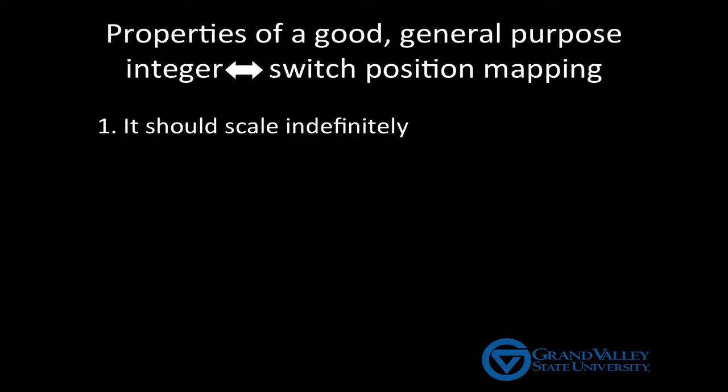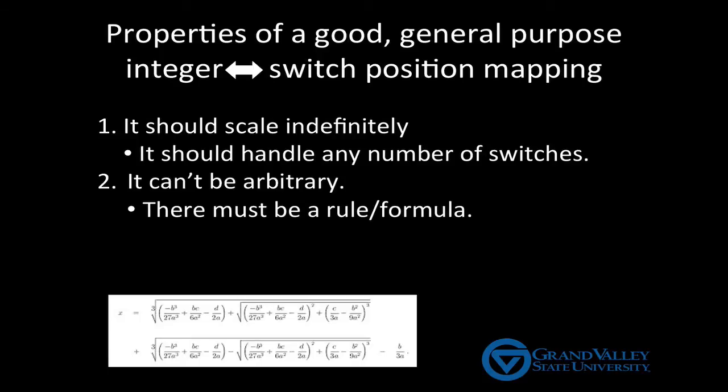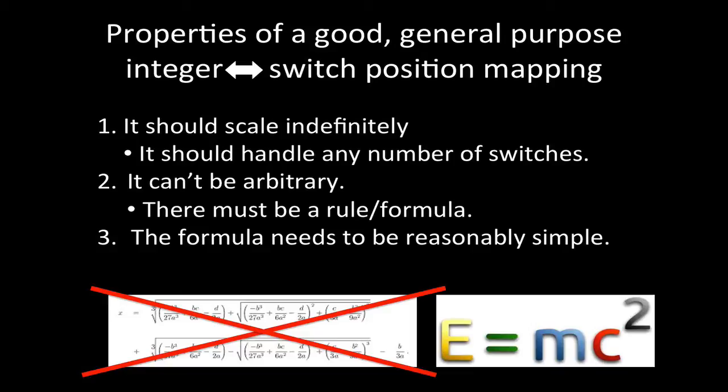So if all the circuits are going to speak the same language, or more precisely, use the same mapping, then we want to choose a mapping that works well for a wide variety of circuits. So what properties would such a good general-purpose mapping have? Well, first, it should scale indefinitely. That means it should be able to handle any number of switches. We don't want to pick a map that just stops working once we need more than, say, 64 or 128 switches. That also means that the map can't be arbitrary. It needs to be based on rules or a formula. If we choose an arbitrary map, then that means the map is simply a list between switch positions and integers, and the list will eventually come to an end, which is the sort of upper bound we just said we don't want. Finally, the formula needs to be reasonably simple. We, of course, don't want to spend any more time than necessary figuring out how we should be setting the switches.